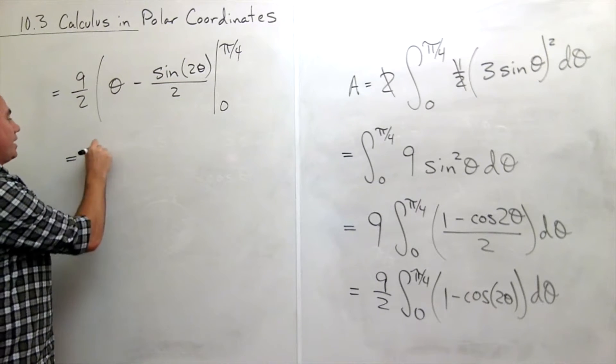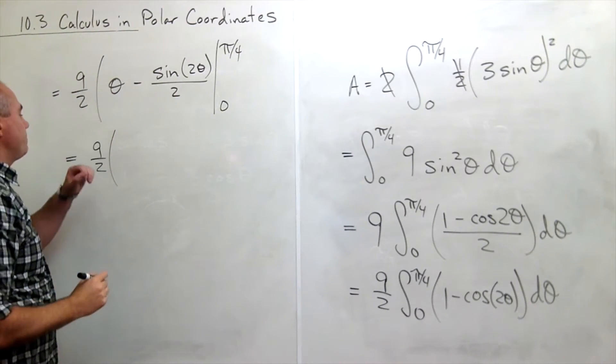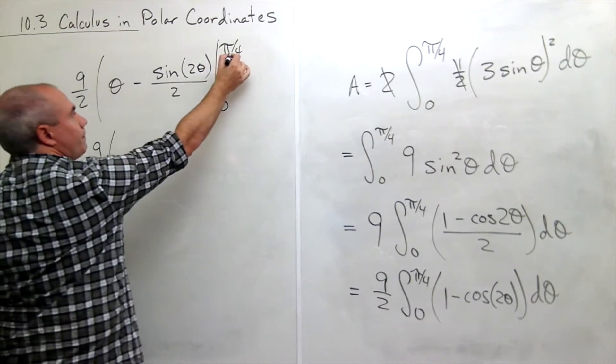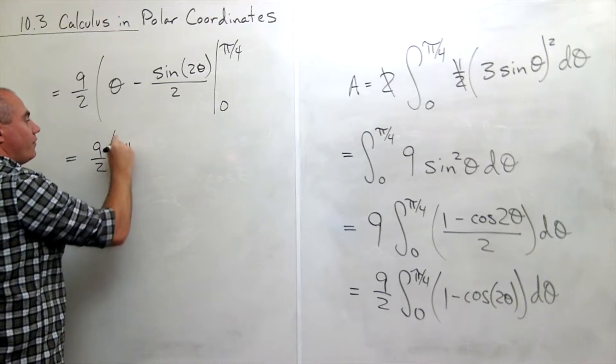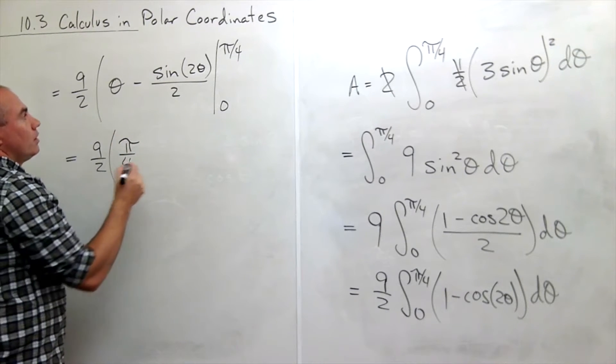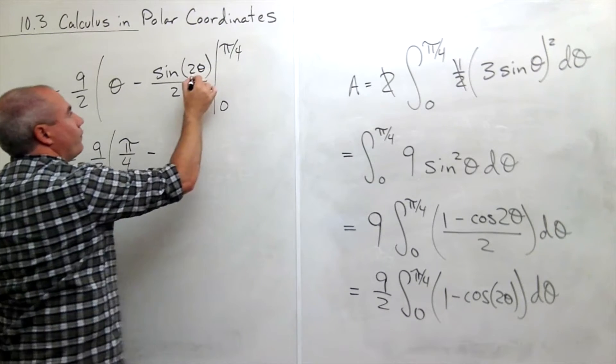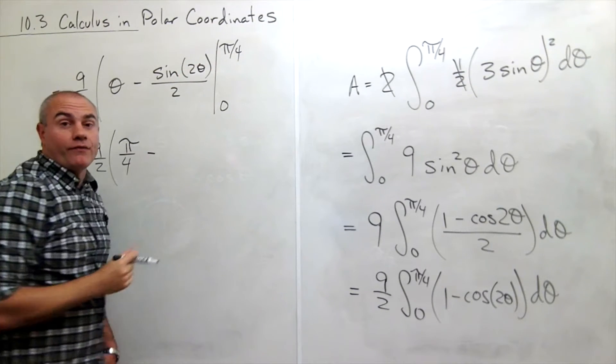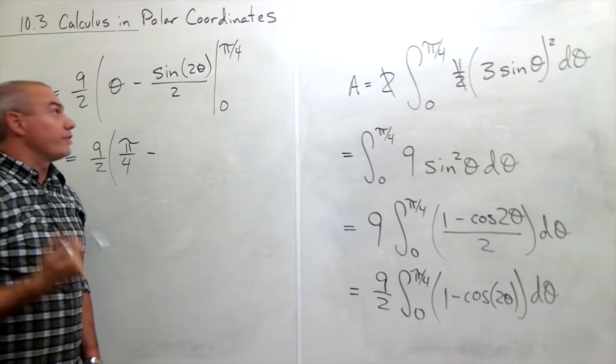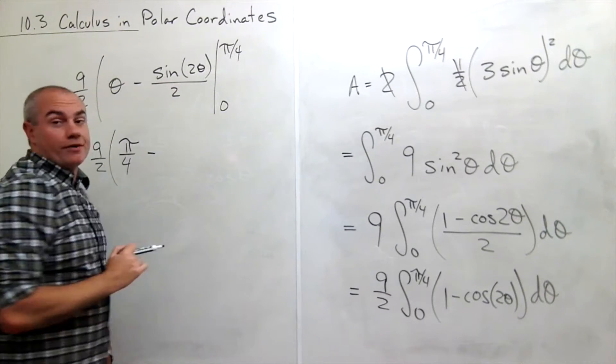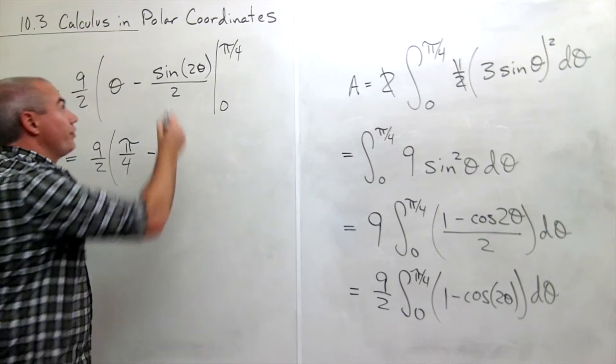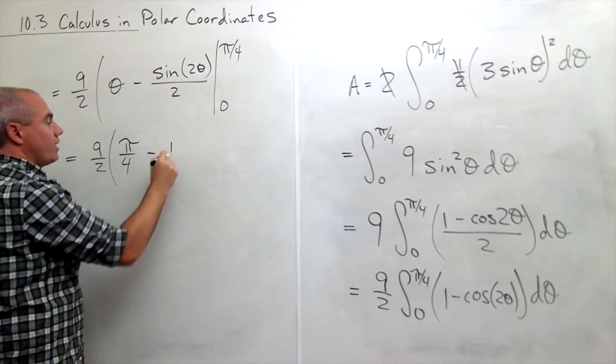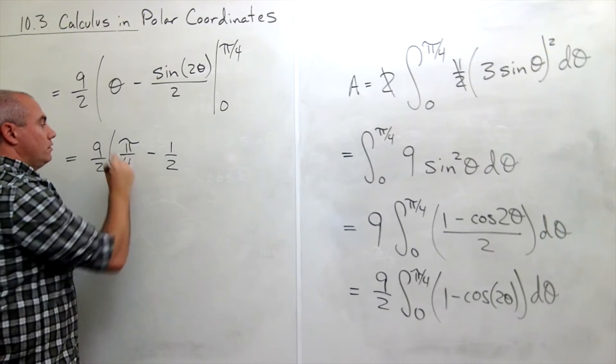I get a nine halves. Now let's plug things in. If I plug in for theta here, I'm plugging in pi over four and I get pi over four minus, if I plug in pi over four here, I get two times pi over four. Two times pi over four is pi over two. Sine of pi over two is one. So this is one over two. So I get minus a half.